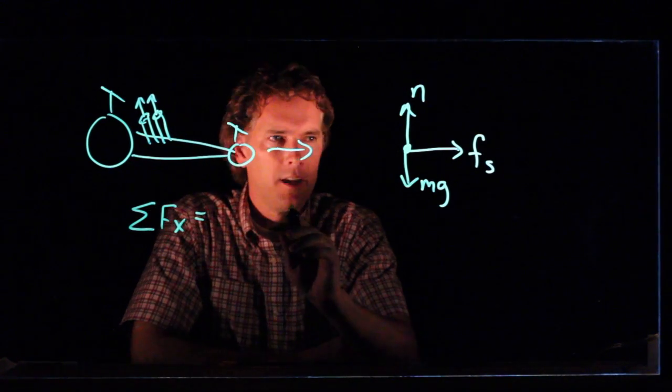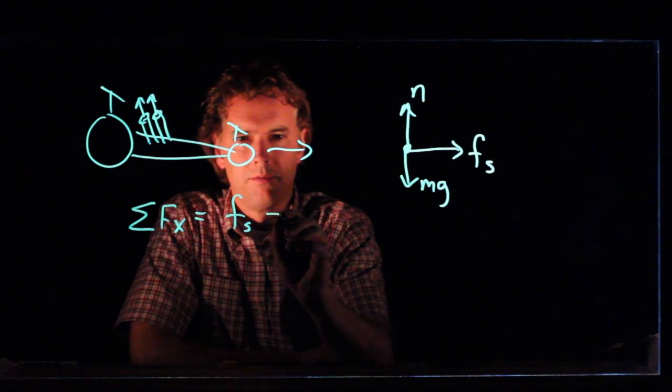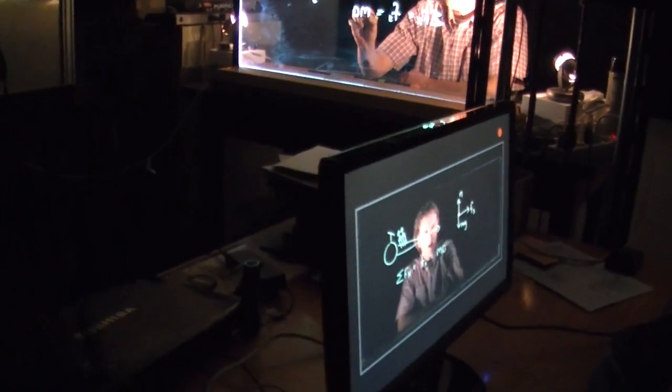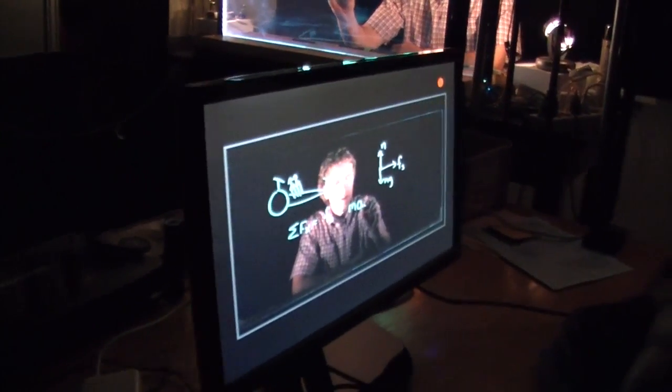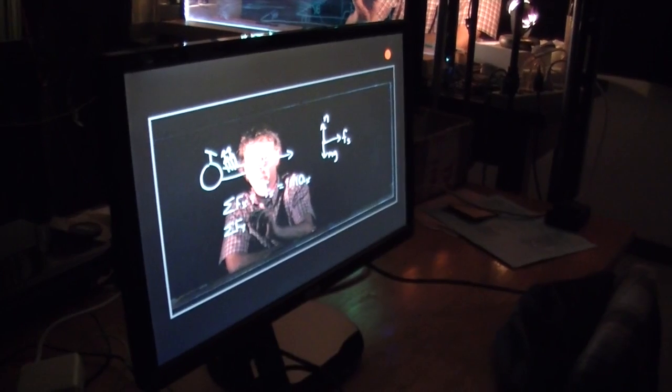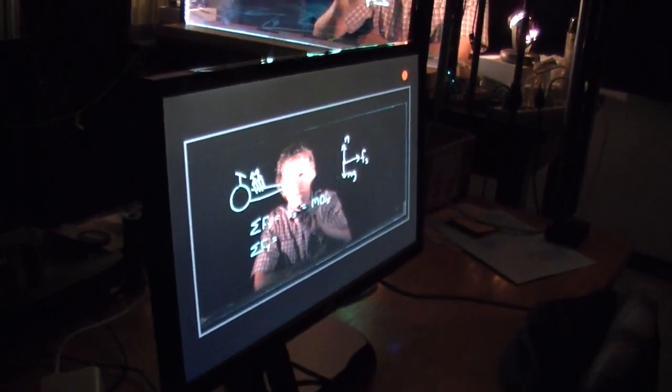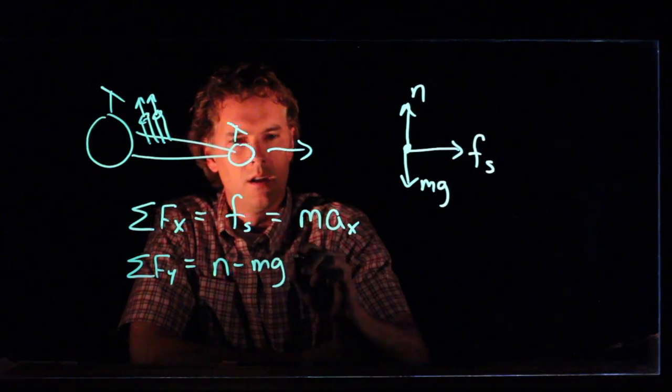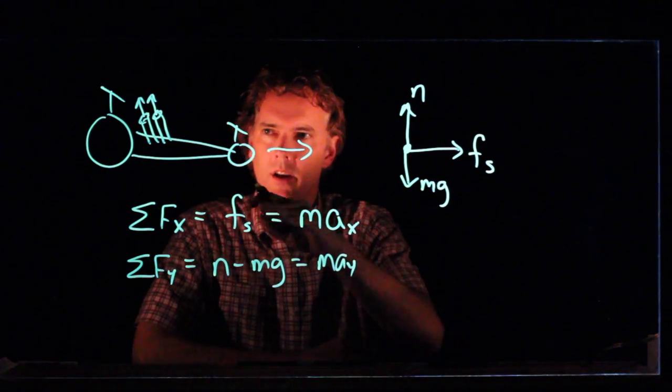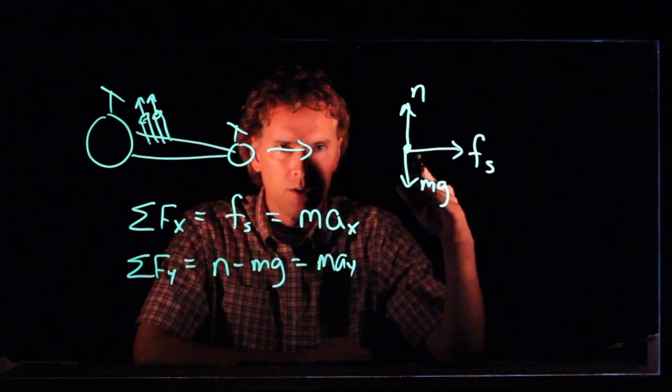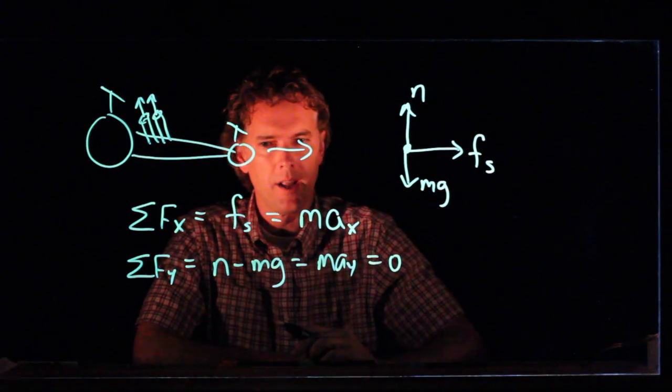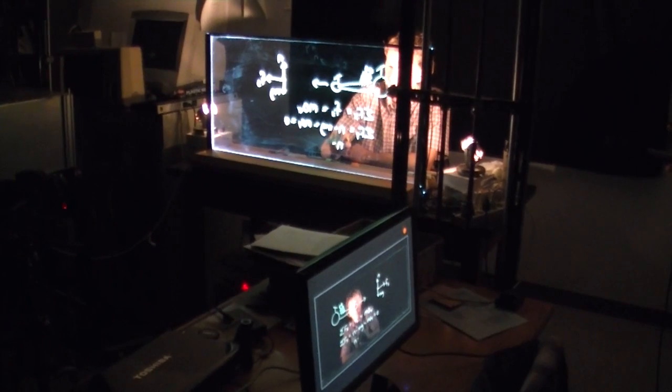Sum of the forces in the x direction are just f sub s. That's it. That's the only force in the x direction, and that's equal to the mass times the acceleration in the x direction. Sum of the forces in the y direction is N minus mg. All of that equals the mass times the acceleration in the y direction. But if it's staying on the track, which, if it's a good run it should, then that's equal to zero. It doesn't accelerate up or down. And so we get N equals mg.